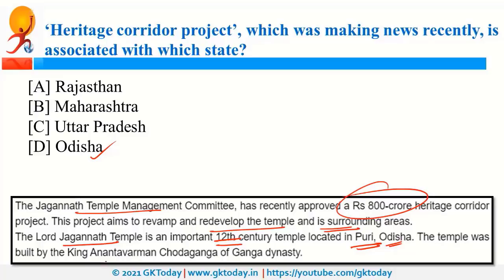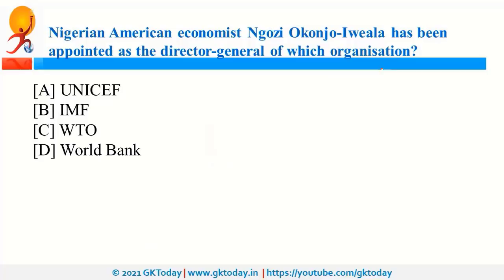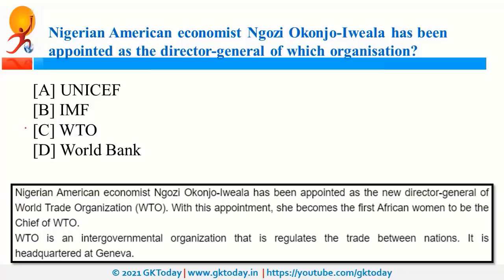Nigerian-American economist Ngozi Okonjo-Iweala has been appointed as the Director-General of WTO — World Trade Organization. She is from Nigeria and is the first African woman to be appointed as the chief of WTO. WTO is an intergovernmental organisation headquartered in Geneva.